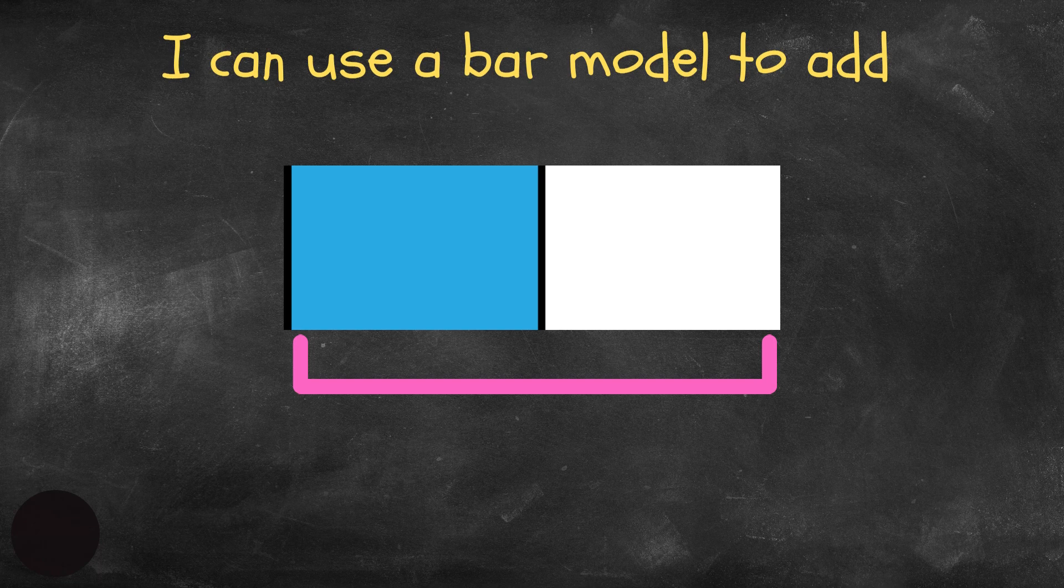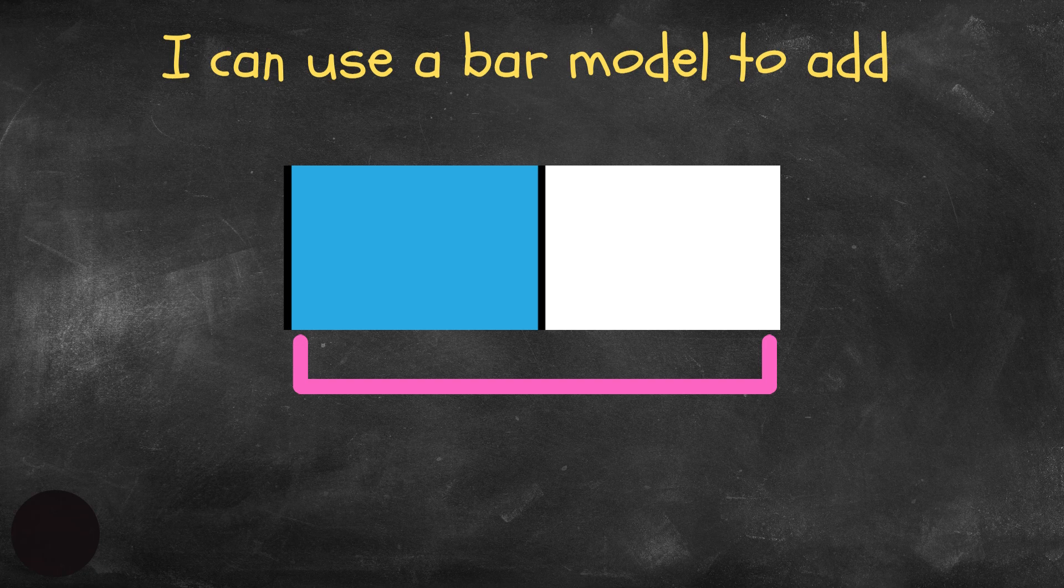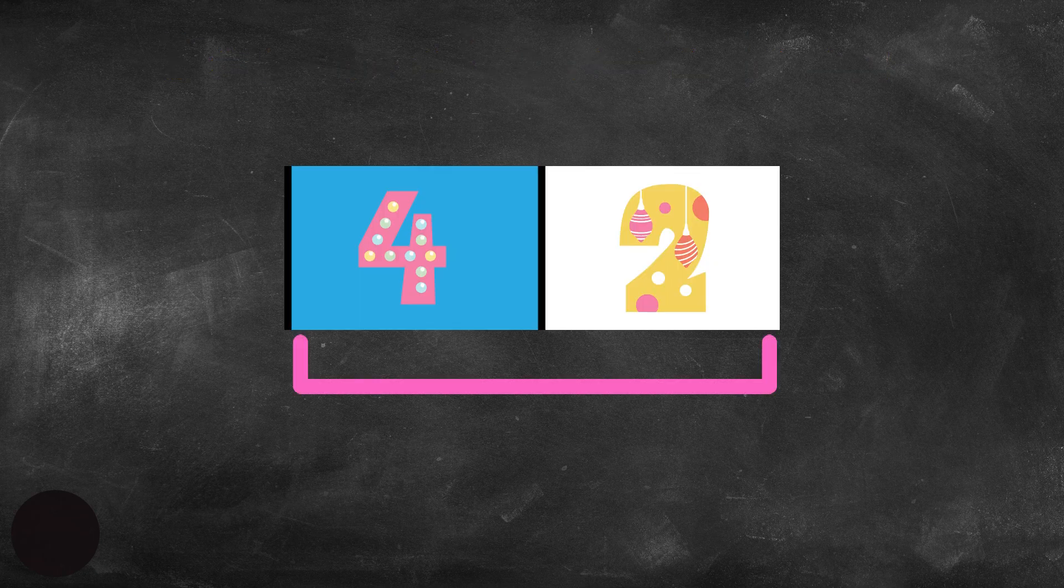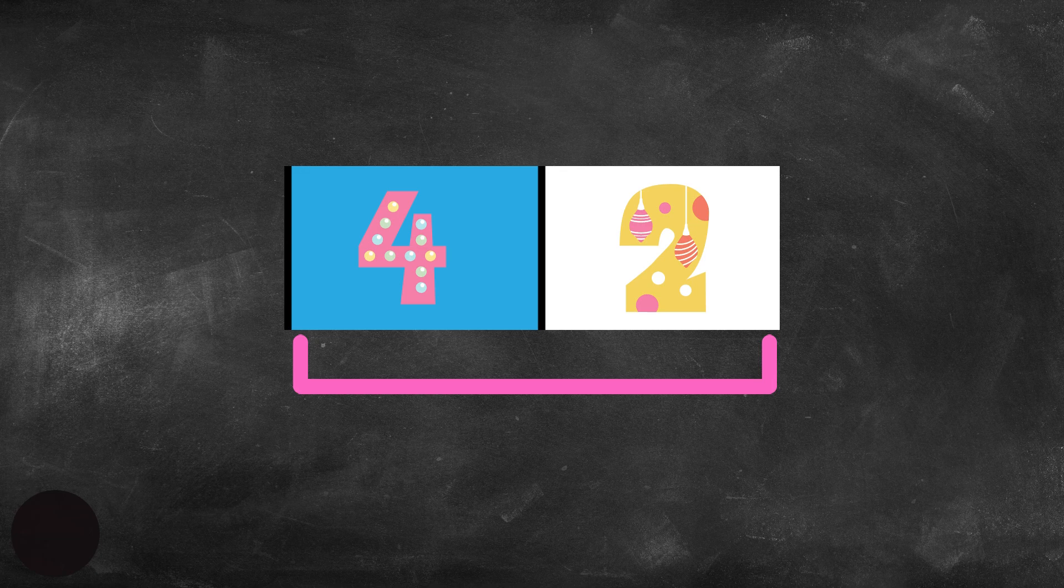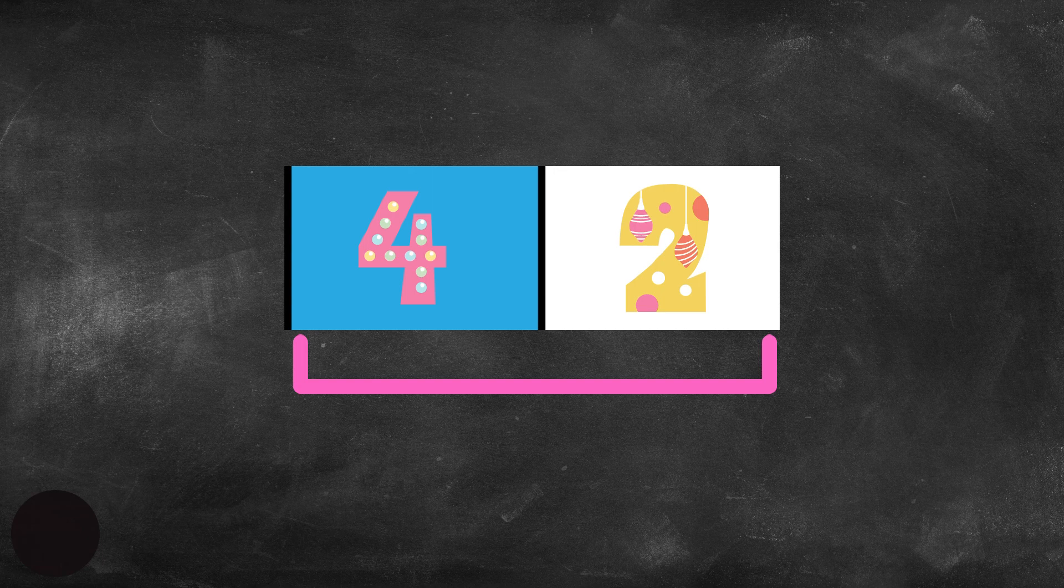Okay, I can use a bar model to add. So we have four and a two. Where will I put the four? Where will I put the two? Well, I can put the four in one part of my bar model, the two in the other part of the bar model, and now I can add them. What is four plus two?